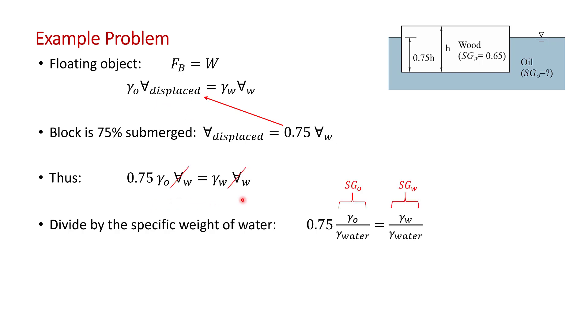Now the volume of the wood cancels out on the left and right. And we can divide by the specific gravity, the gamma of water, in order to express this equation in terms of specific gravity. Remember, specific gravity is the gamma of the fluid over the gamma of water, technically at 4 degrees C. So I've divided through by the gamma of water.